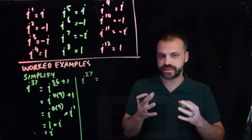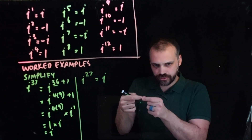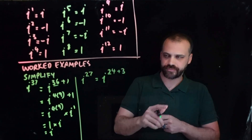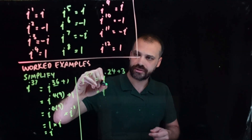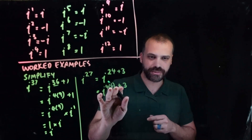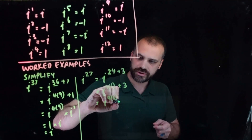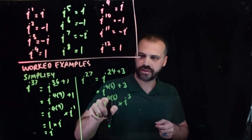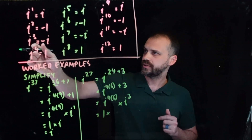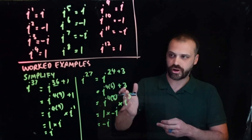Another example: i to the 27. Think of your 4 times tables — go with the multiple of 4 just less than 27. So: i to the 24 plus 3, which is the same as i to the 4 times 6 plus 3. That is i to the 4 times 6 times i to the 3. Now, i to the 4 times 6 is always 1. And i to the 3 is equal to negative i. So i to the 27 is negative i.